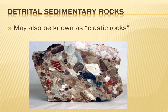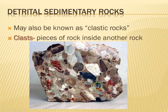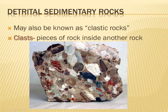Let me clear up one quick language point — a vocabulary word for you: a clast. A clast is the pieces of rock inside of another rock. For instance, in this picture there's a clast that's red and white striped, one that looks almost blue, a white clast, a brown and white striped clast. Each one of those is a clast. We're going to classify our detrital or clastic sedimentary rocks based on the size and shape of the clasts.